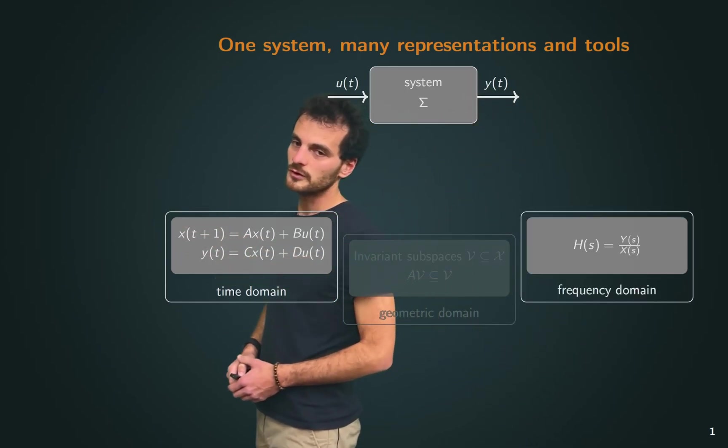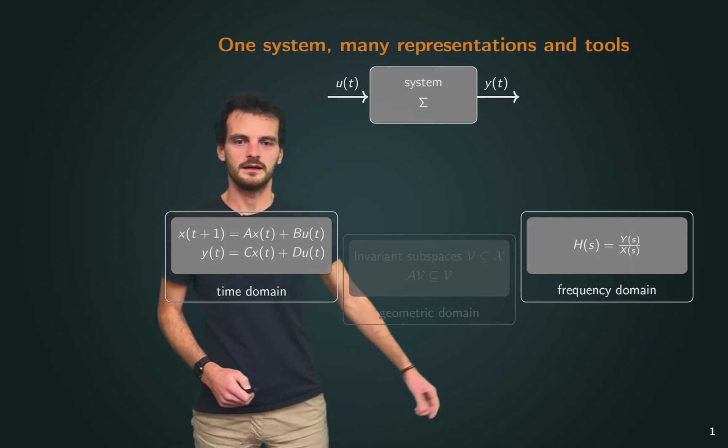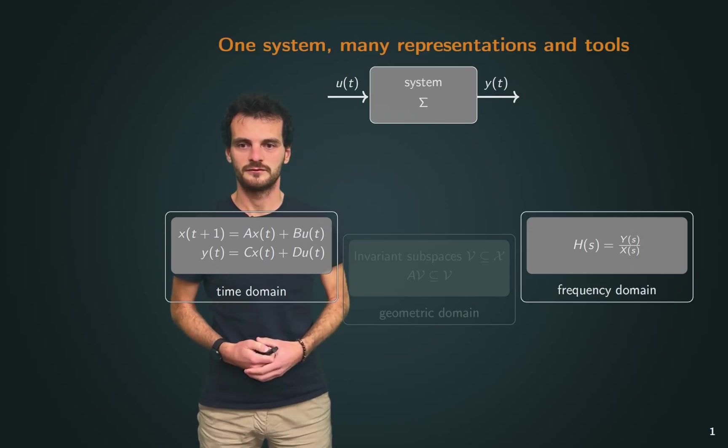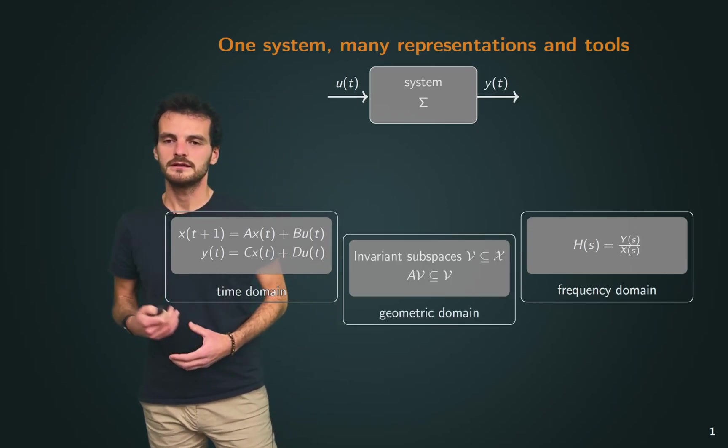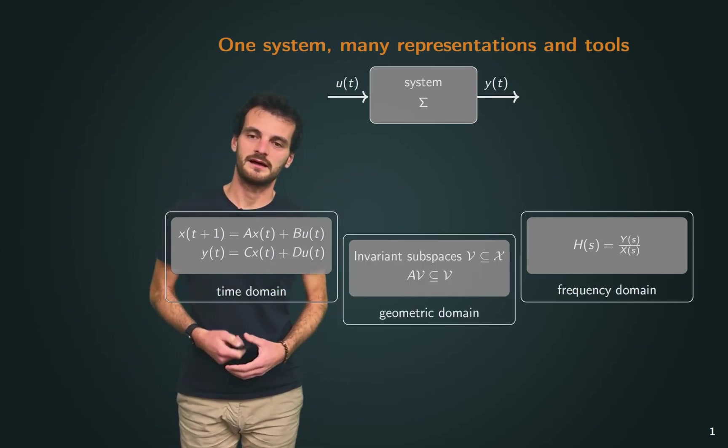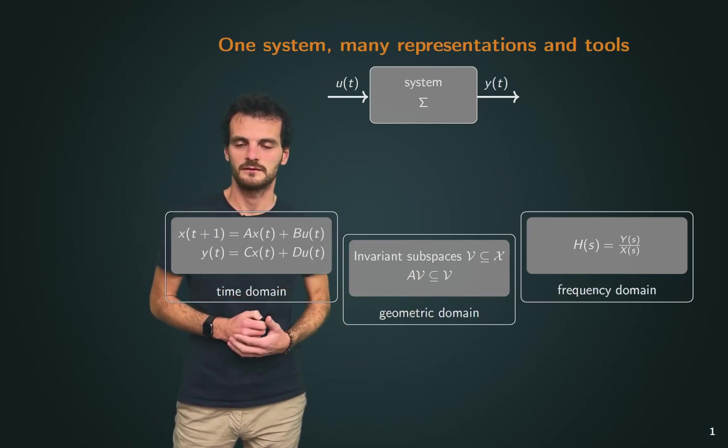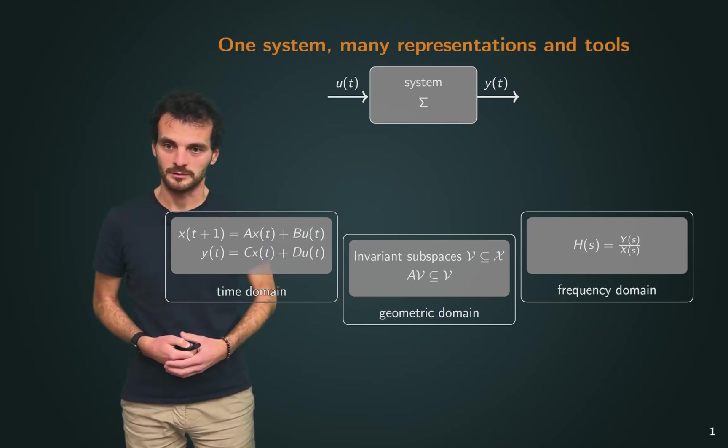Another is the frequency domain, where we can use the poles and zeros of the system through a transfer function. And finally, the geometric approach is perhaps a less well-known but still very powerful approach that leverages the invariant subspaces of the system to infer its properties.